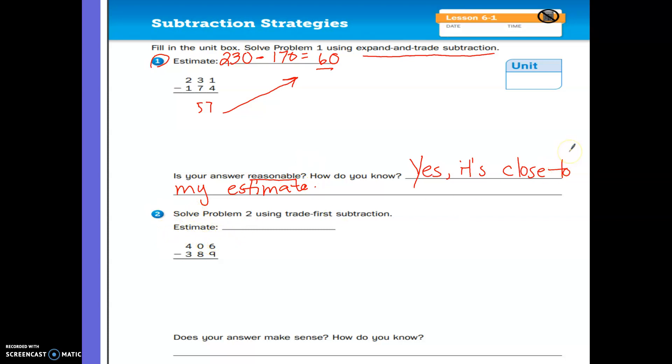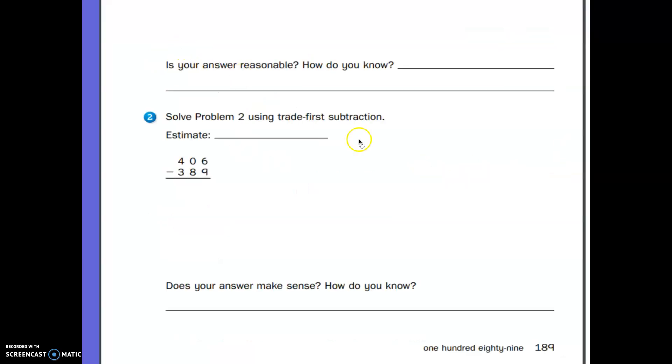Okay. Good. Now, I want you to look at number 2. We've got different directions for number 2. Number 2 says solve problem 2 using trade first subtraction. All right. So we have the problem 406 minus 389. Let's make an estimate. I'm going to say a good estimate would be 400 minus 300. And I'm going to get 100. Now, we're going to use the trade first subtraction strategy. Let's take a look at our numbers. Is 400 greater than 300? Yes, it is. Is 0 greater than 80? No, it's not. Is 0 equal to 80? No, it's not. Is 6 greater than 9? No, it's not. Well, we will need to make some trades. So we're going to go ahead and trade all the way across.